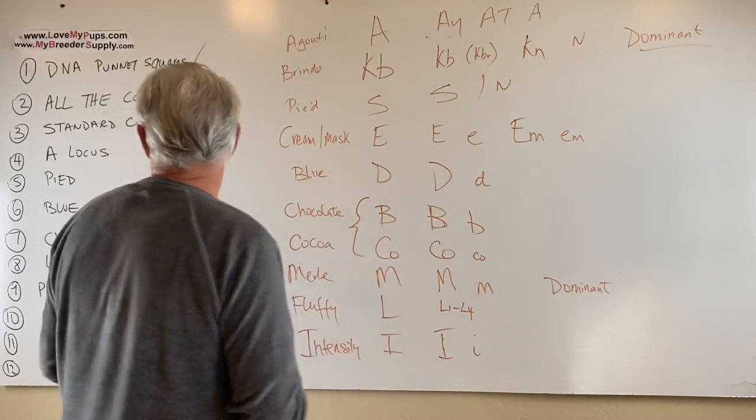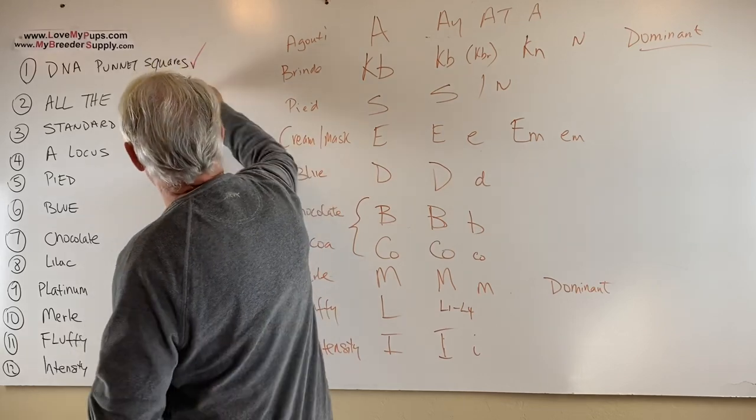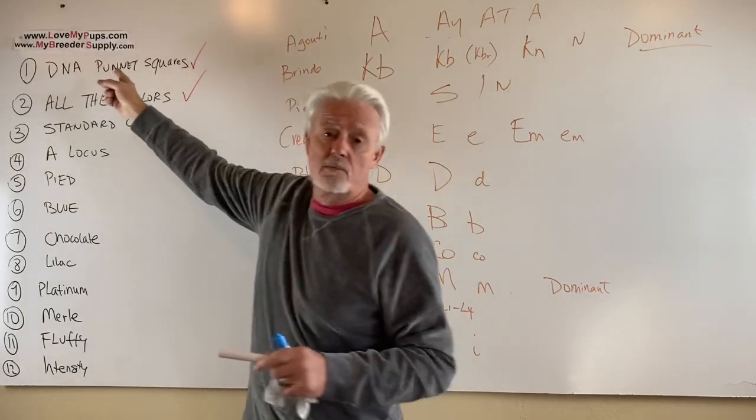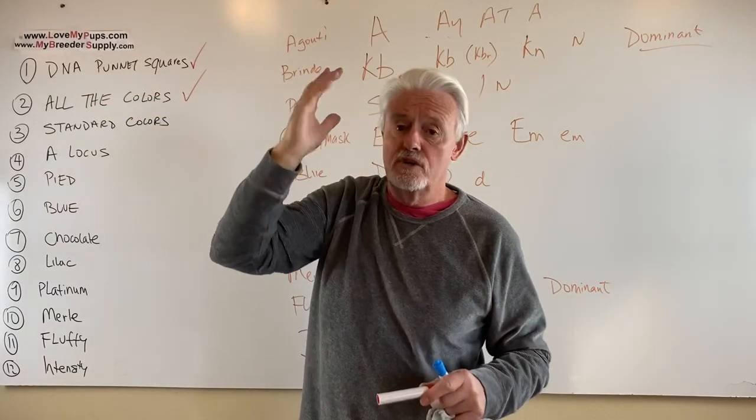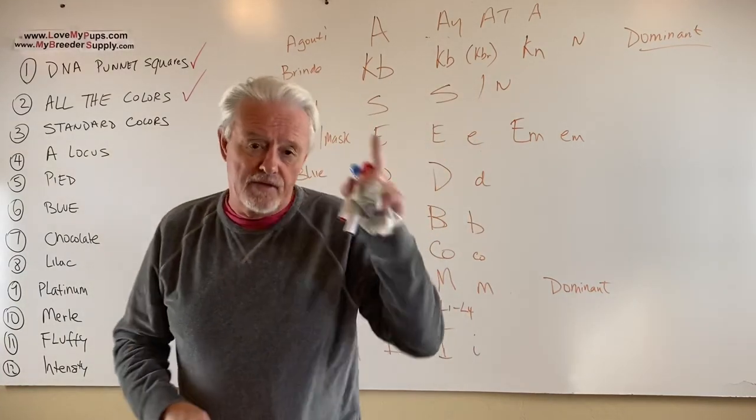Okay, enough of that. We've got that one out of the way. So now the next one is we're going to talk about the standard colors that you see in the show ring. So that's the next one that we're going to do. And again, subscribe to us. Go to My Breeding Supply. If you like what we're doing, subscribe to us. It helps us out. Give us comments. If there's things here that we've missed, let us know about it. Thanks folks.